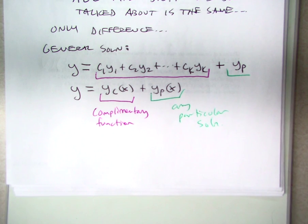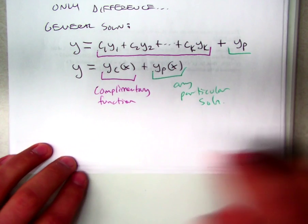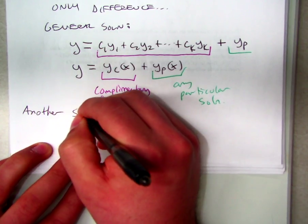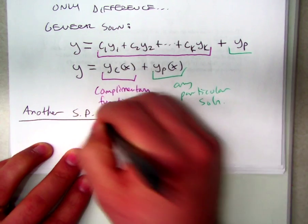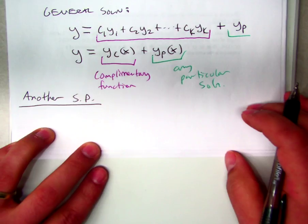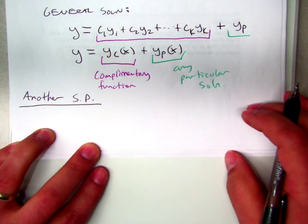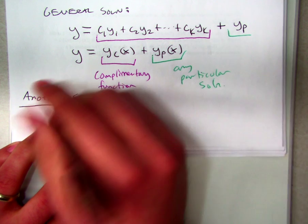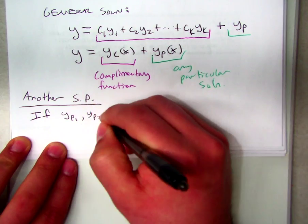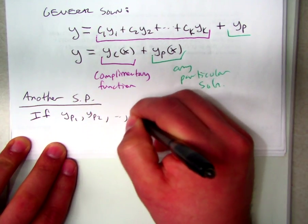To add to that, let's also briefly talk about another superposition principle. If YP1, YP2, and so on, YPK.